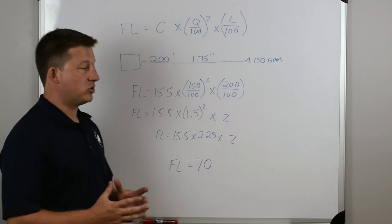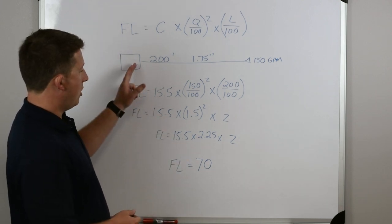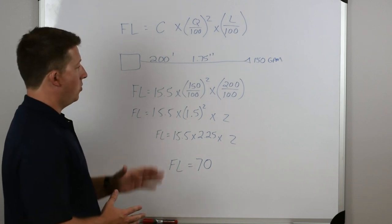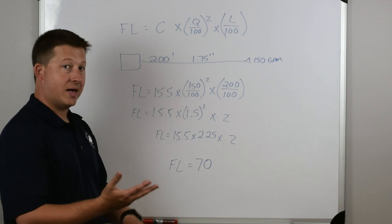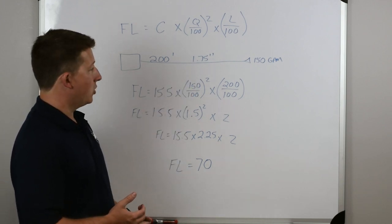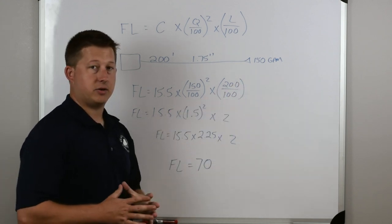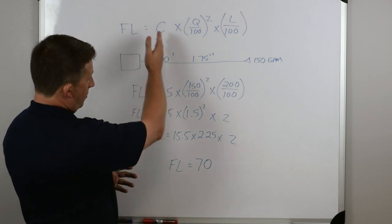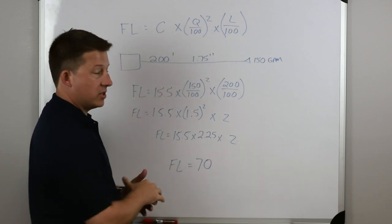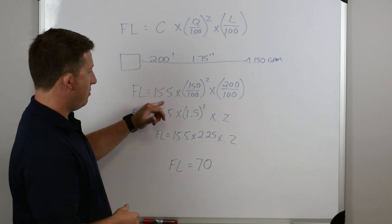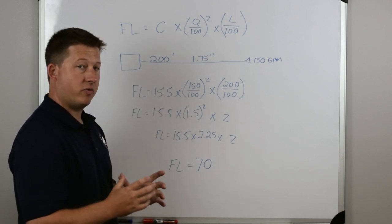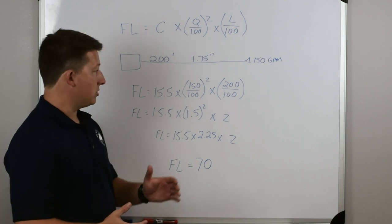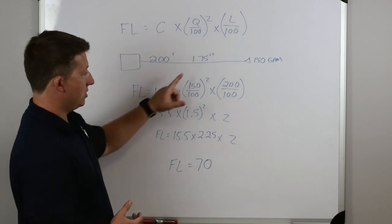For our first friction loss problem, I've drawn an example. This square represents the fire truck, and off of that fire truck we've pulled 200 feet of inch-and-three-quarter hose flowing 150 gallons per minute. We check that we have all three pieces: size of hose — yes, inch-and-three-quarter; quantity of water — yes, 150 GPM; and length — yes, 200 feet. The coefficient for inch-and-three-quarter hose is 15.5, which we get from the chart.